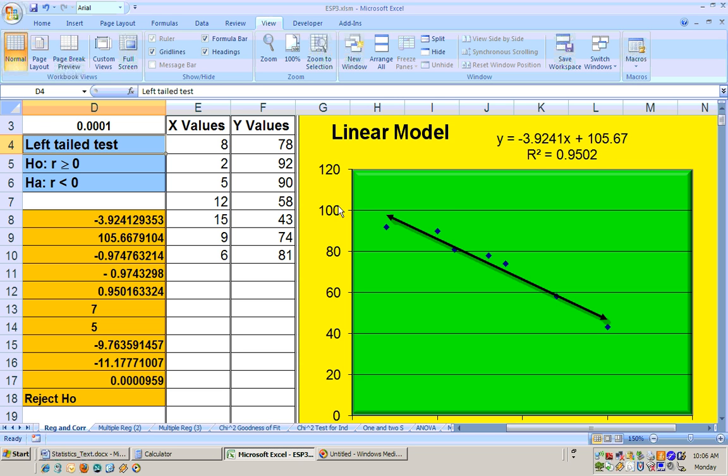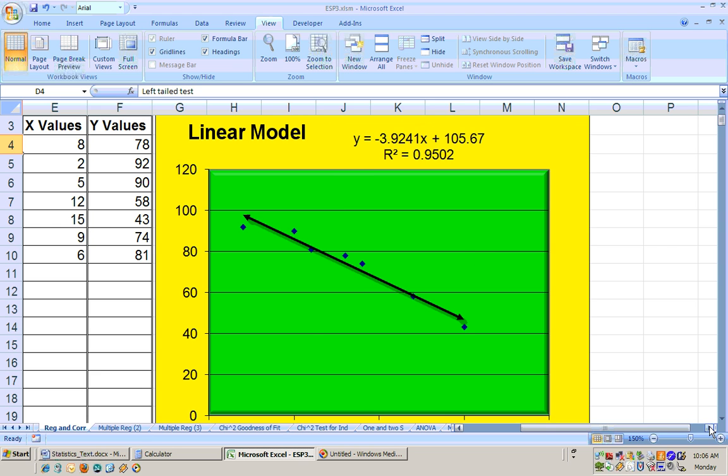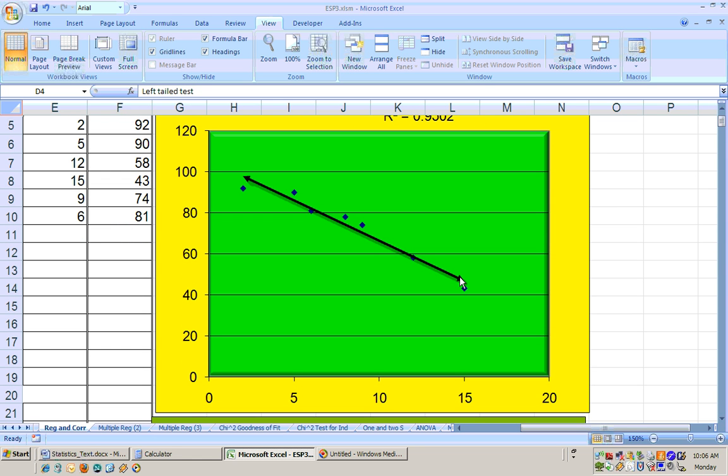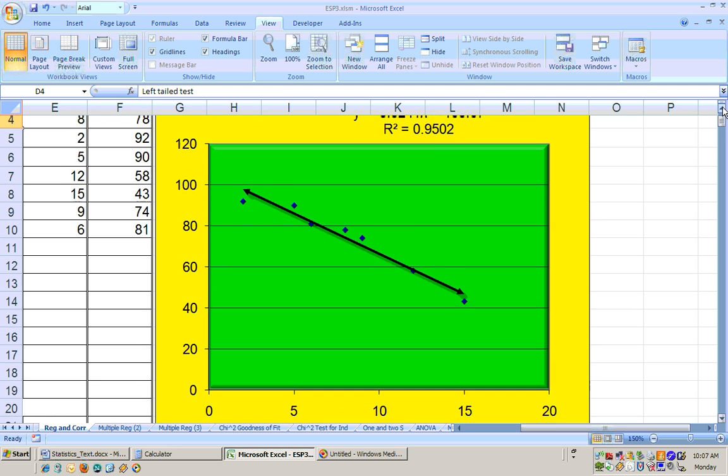Now, maybe it's impossible to get 105.67 on the test, but this equation doesn't know that, so it just keeps on drawing. It's just going to go in a straight line. It doesn't know that you can't get above 100. Or maybe if you extended this line farther out here, it would tell you that if you had, like, 30 absences, you might have a score of negative 10 on the test. Well, that's impossible, so there's a certain range in which this line makes sense, and that's what the slope and the y-intercept mean on this type of problem.